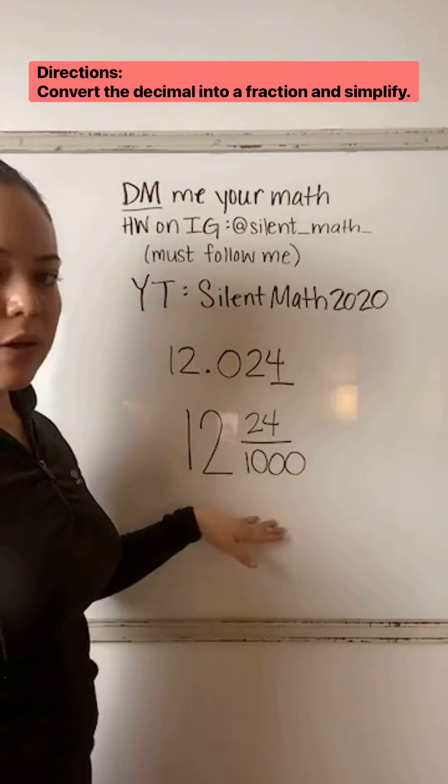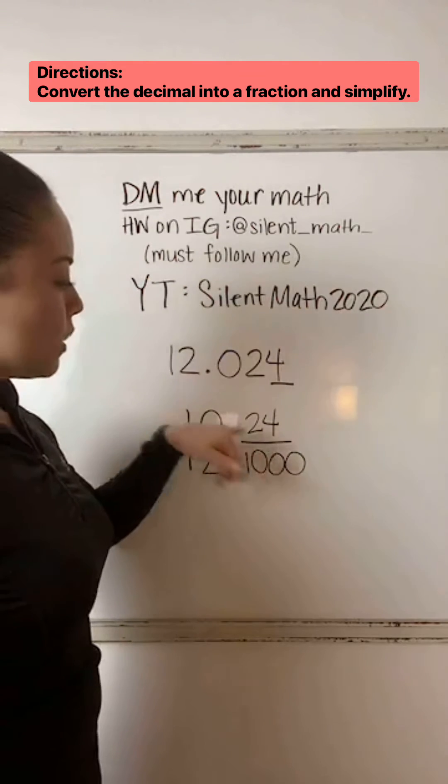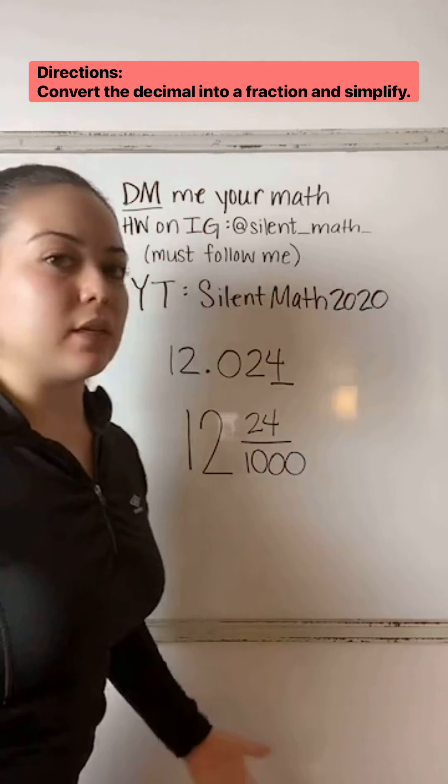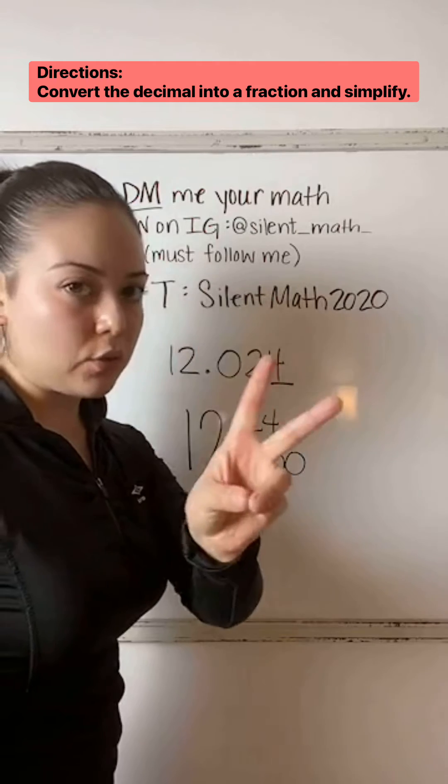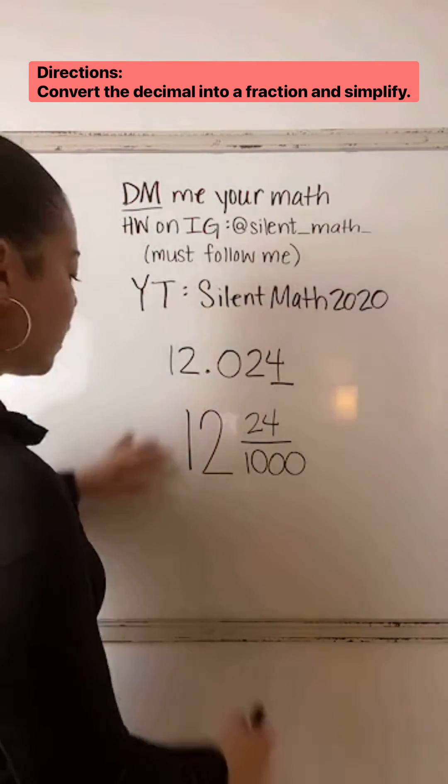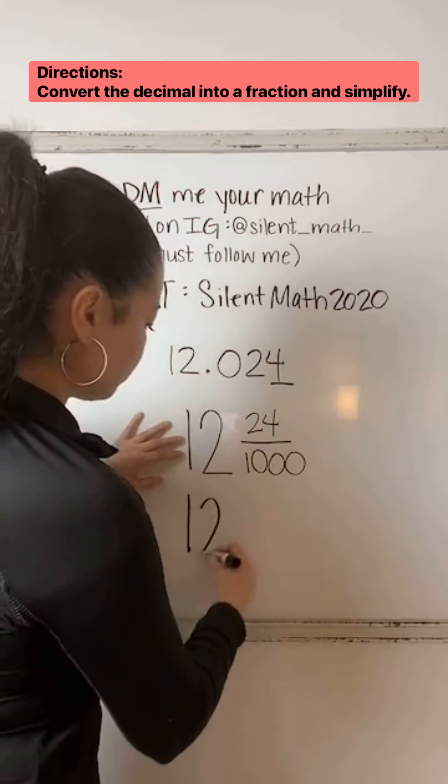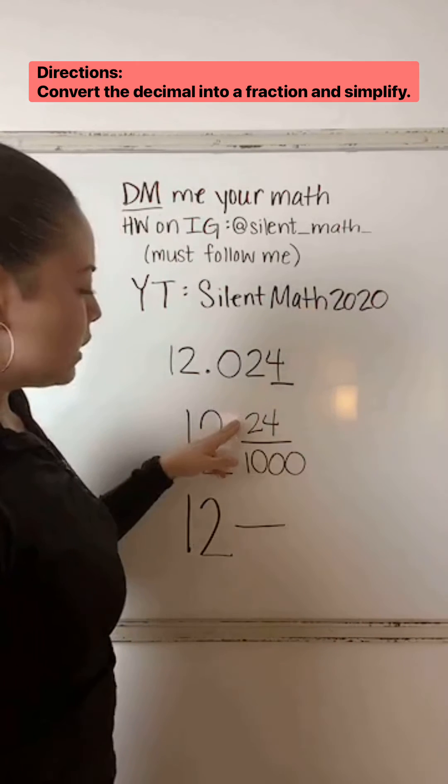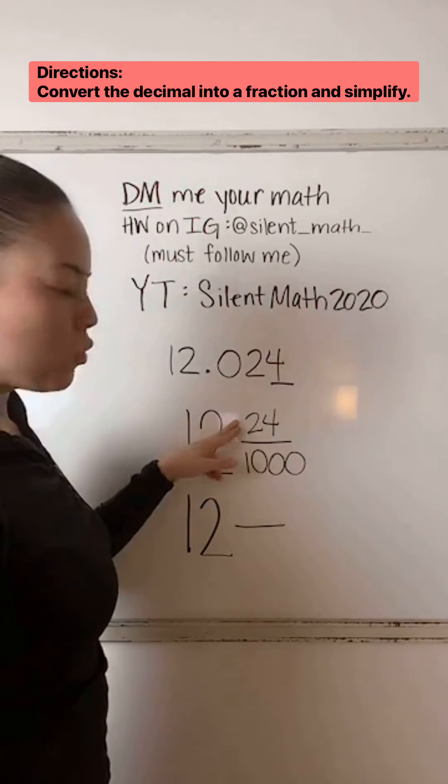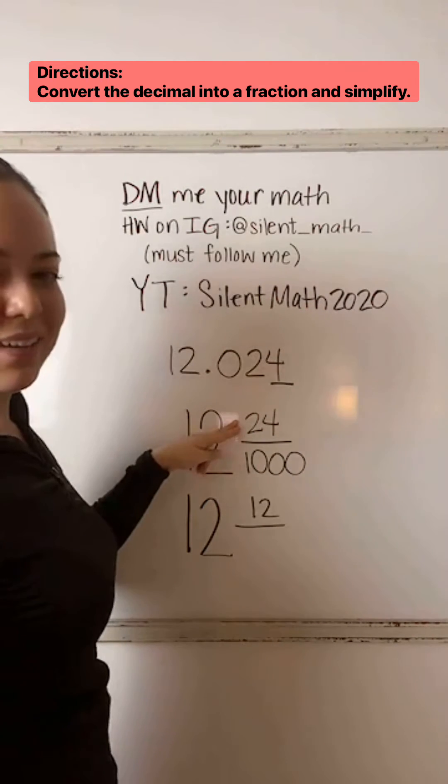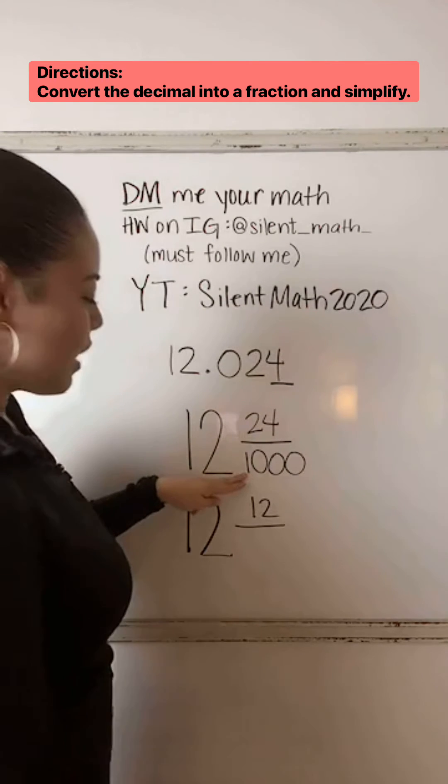As you can see though, 24 and 1,000, they're even. So they share a common factor of at least two. We can divide by two and simplify from there. So if we do 12, let's take half. What is half of 24? 12. And then half of 1,000 is 500.